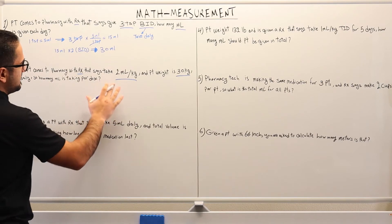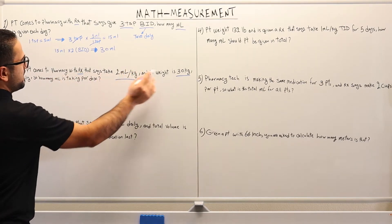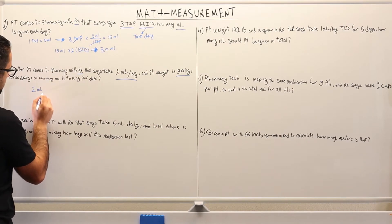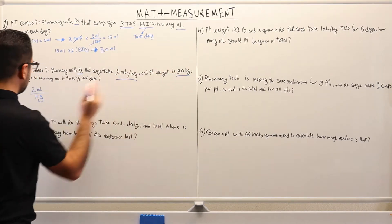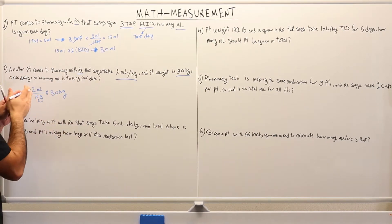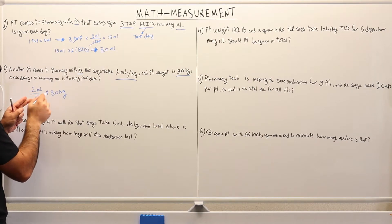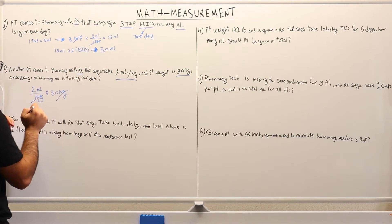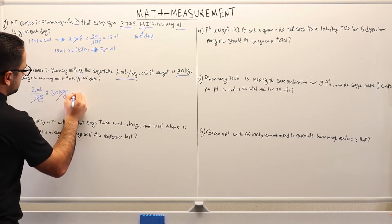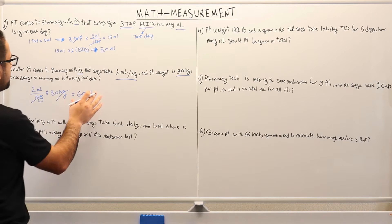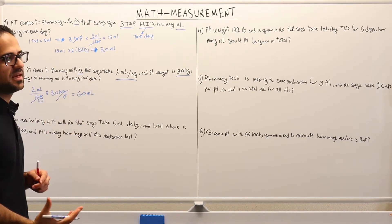What we need to do is calculate how many milliliters based on the patient's weight. We know there are two milliliters per kilogram and the patient is 30 kilograms. So we multiply two milliliters over kilogram by 30 kilograms. Taking kilogram out, we get two times 30, which is 60 milliliters. This is the dose the patient is receiving every day.